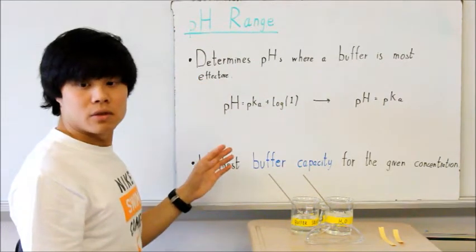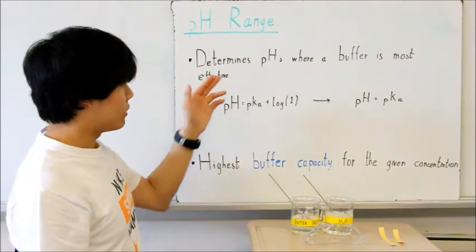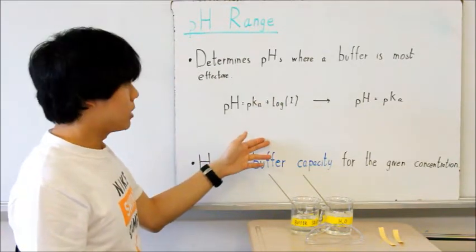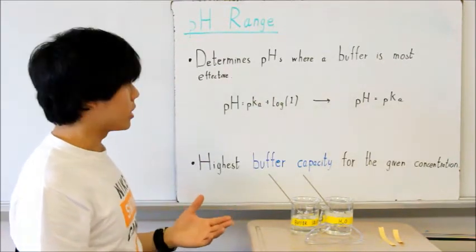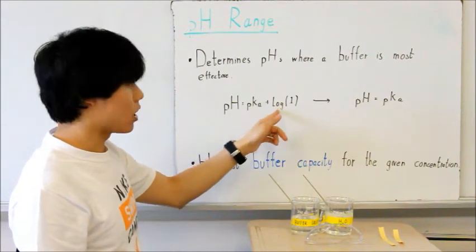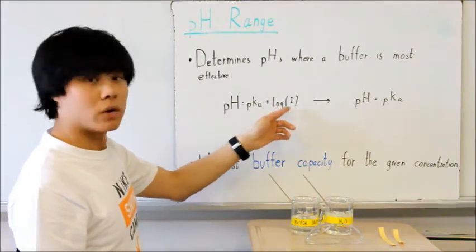A buffer is the most effective when the concentrations of the acid and the conjugate base are equal. Therefore, if you remember the Henderson-Hasselbalch equation, it will be when the log is the log of 1. Therefore, we all know the log of 1 is 0.